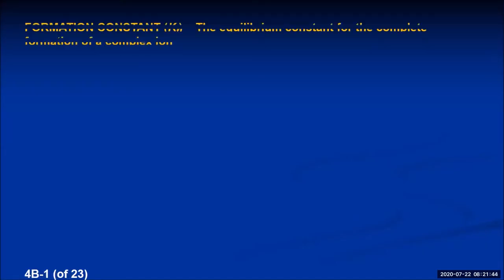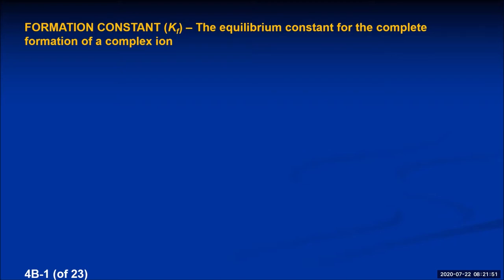This is lecture 4b. Today we're going to talk about equilibrium constants called formation constants, abbreviated K sub f, and this is just the equilibrium constant for the complete formation of a complex ion.